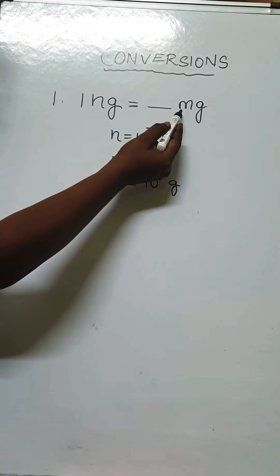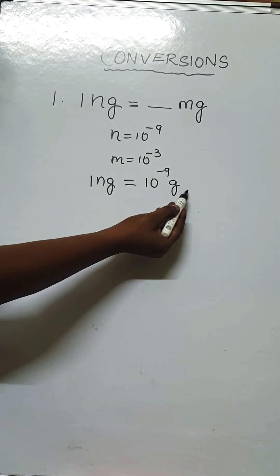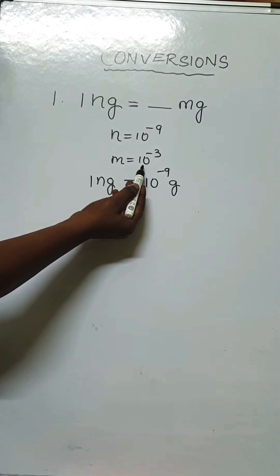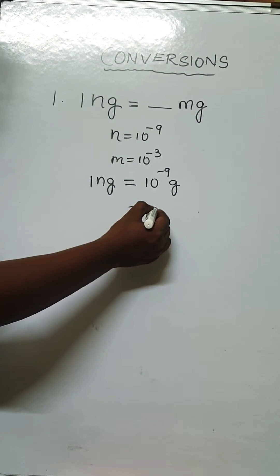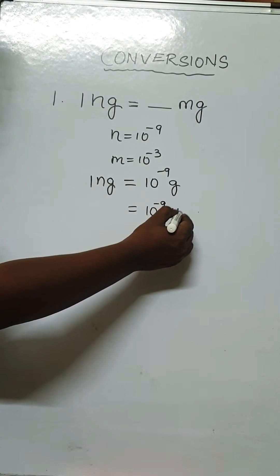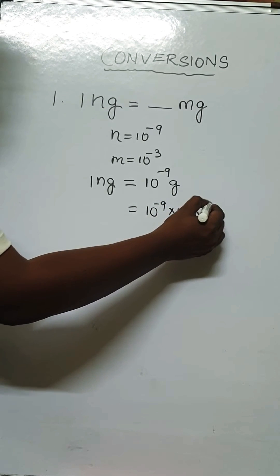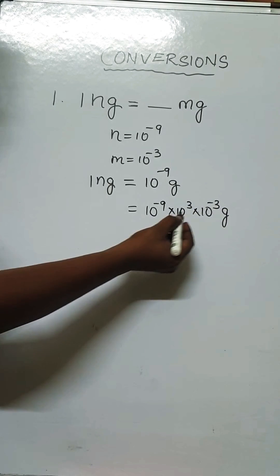Same as we have to convert into milligram, we have to bring milli, but there is no milli. Milli value is 10 power minus 3, so we have to bring 10 power minus 3. In order to bring 10 power minus 3, we have to multiply with 10 power 3 and 10 power minus 3.